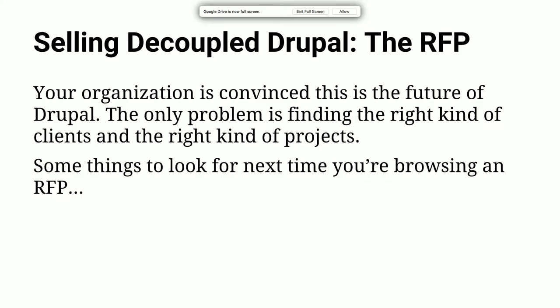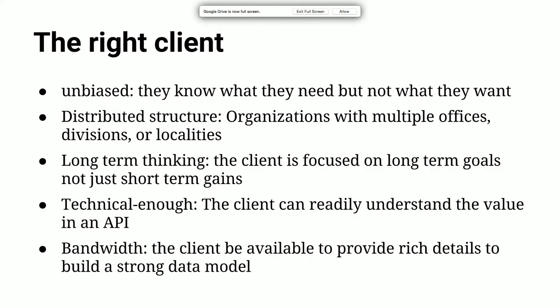Let's think about how we can start cultivating the right kind of clients for this model. While you're browsing RFPs, some things to take note of in terms of spotting the right client: generally for this kind of project, you want a client to be unbiased. They know what they need, but not necessarily what they want. Sometimes an RFP will say 'we want a Drupal site,' which is fair enough. But if a client comes focused on their individual needs, then we can experiment and apply the right solution without just applying the solution they asked for.